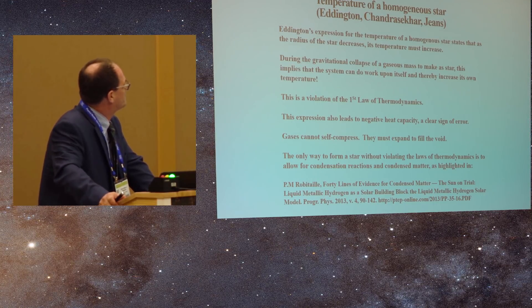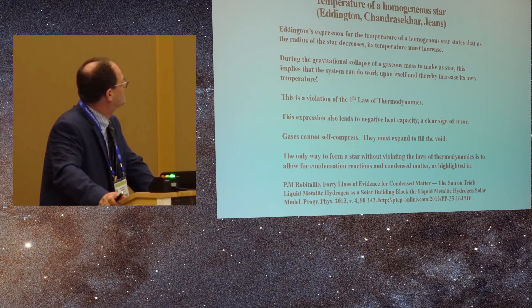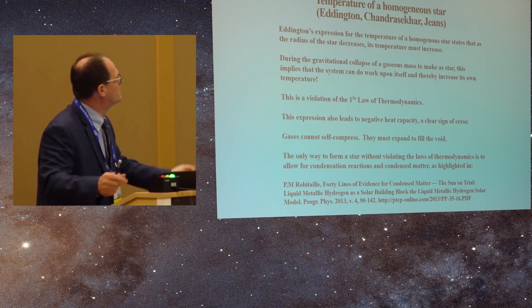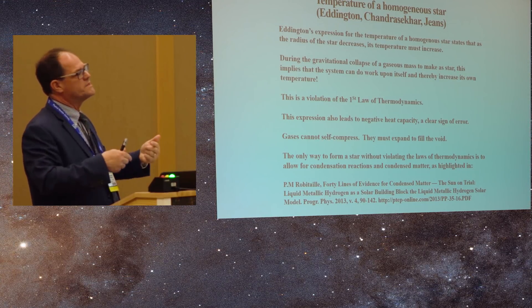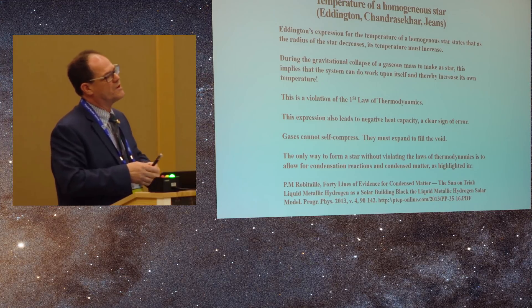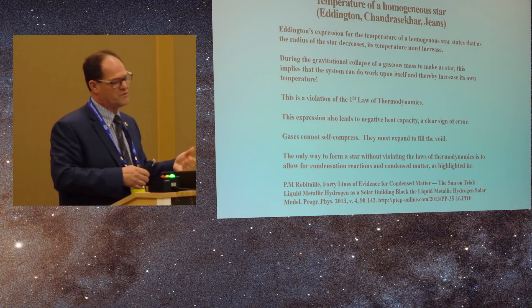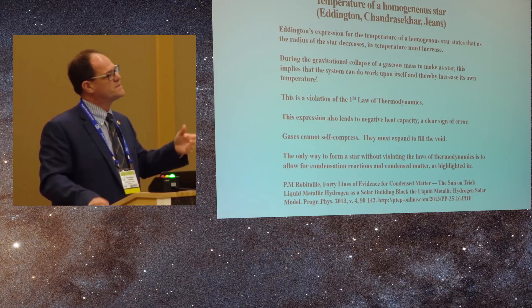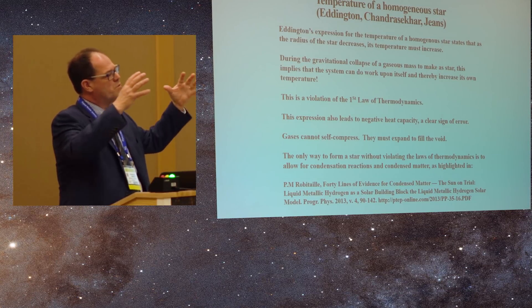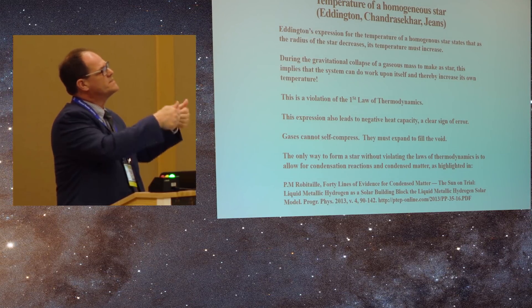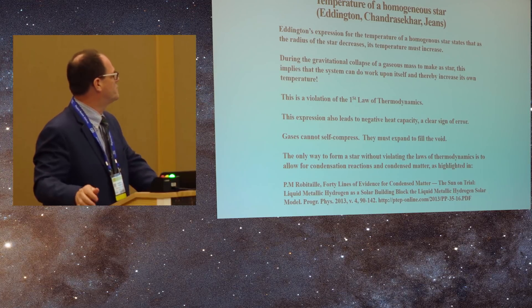So during the gravitational collapse of a gaseous mass to make a star, this implies that the system must do work upon itself and thereby increase its own temperature. So this is another problem. This is a clear violation of the first law of thermodynamics. So you have a system that's becoming more ordered, it's doing work on itself, raising its own temperature, and that's a violation of the first law.